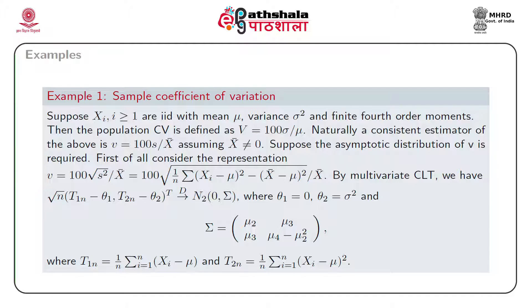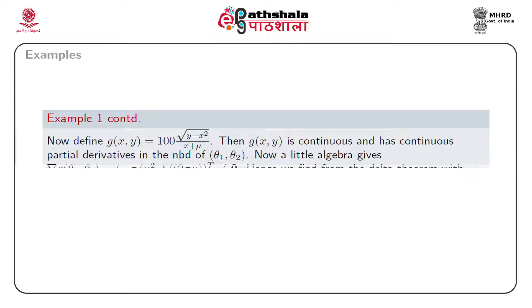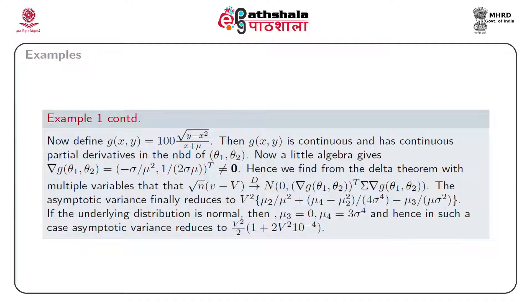We have discussed the asymptotic joint distribution of T_1n and T_2n, so we can apply the delta theorem using a suitable function G. In this case G(x,y) is defined as 100 times sqrt(y - x^2) divided by (x + mu). This function G(x,y) is continuous and has continuous partial derivatives in the neighborhood of (theta_1, theta_2).